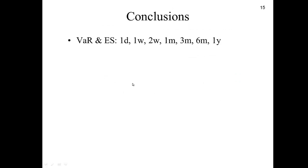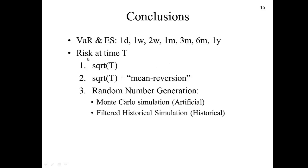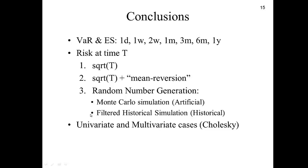The conclusion of this chapter is that we learned how to compute Value at Risk and Expected Shortfall for horizons greater than one day, say six months. We reviewed the square root of time rule, then the GARCH version which adds a mean reversion component, and finally random number generation via Monte Carlo simulation or filtered historical simulation. We covered both the univariate and multivariate cases using the Cholesky decomposition.